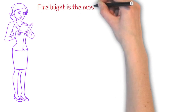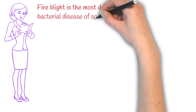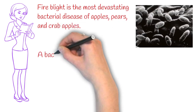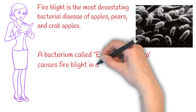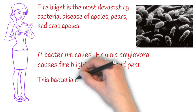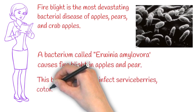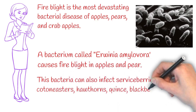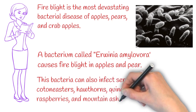Fire blight is the most devastating bacterial disease of apples, pears, and crabapples. A bacterium called Erwinia amylovora causes fire blight in apples and pears. This bacteria can also infect serviceberries, cotoneasters, hawthorns, quinces, blackberries, raspberries, and mountain ashes.